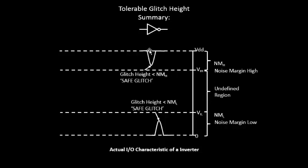We have this particular glitch whose glitch height was again less than 20% of VDD, which is NMH, its noise margin high, and as a result of that this particular glitch also falls into the bucket of safe glitches.